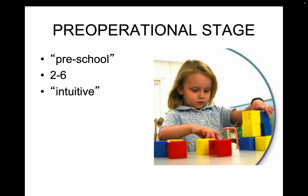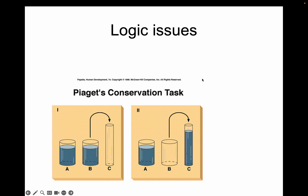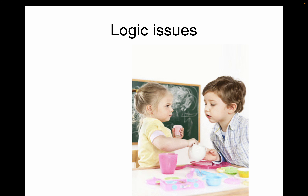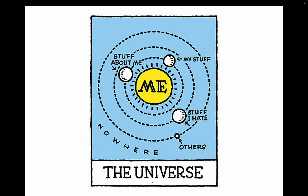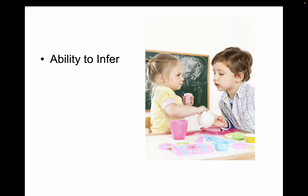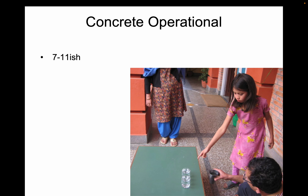Stage two — think of preschool. These kids have some thinking issues Piaget talked about — they basically lack logic. They lack conservation: if you pour a cup into a taller glass, they think the taller one has more. They're egocentric — they think the world revolves around them. And they have irreversibility — they sometimes can't see someone else's point of view. This is the pre-operational stage.